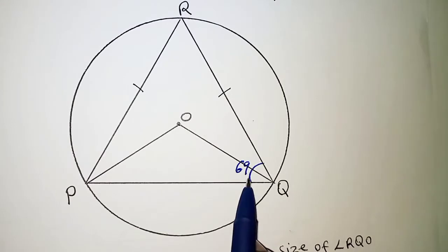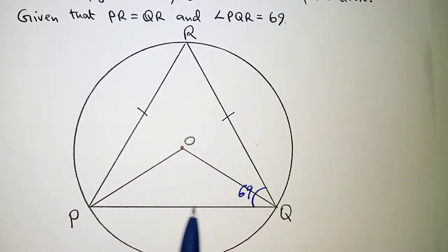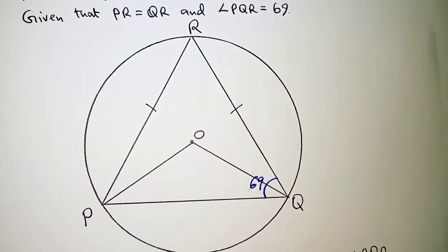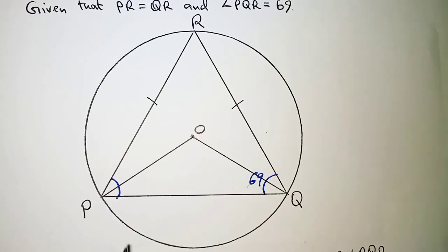So if the whole of this is 69, we had also noted that triangle PQR is an isosceles triangle, and therefore the base angles are equal. So at P we also have 69 degrees.